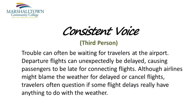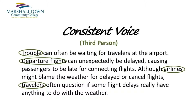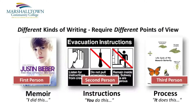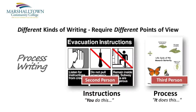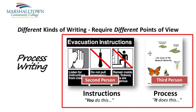Or how about third-person voice? In this case, the paragraph might read like this: Trouble can often be waiting for travelers at the airport. Departure flights can unexpectedly be delayed, causing passengers to be late for connecting flights. Although airlines might blame the weather for delayed or canceled flights, travelers often question if some flight delays really have anything to do with the weather. Hopefully you've noticed that second-person and third-person voice are exactly the types of writing that I want you to use in the assignments for this week: the how to do something paragraph and the how something works paragraph.